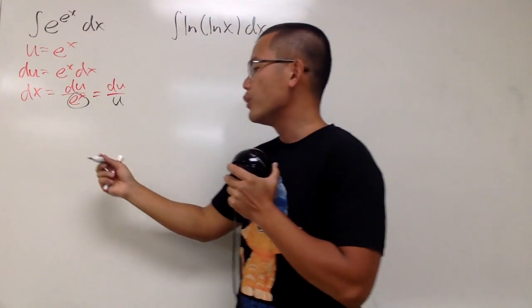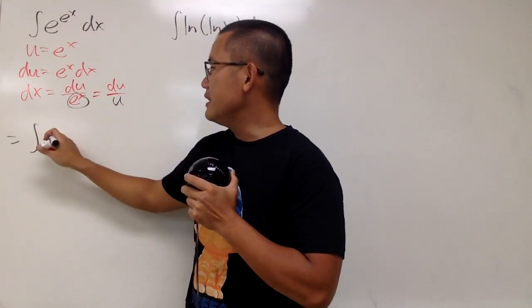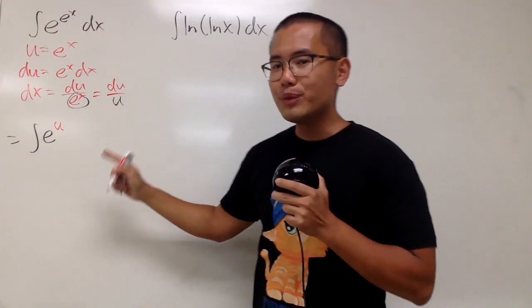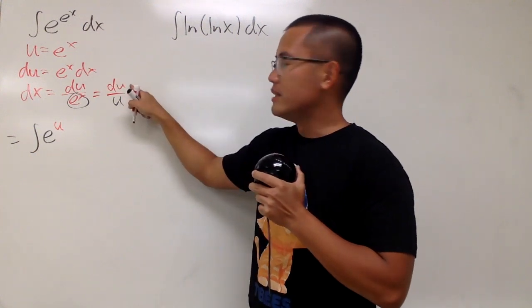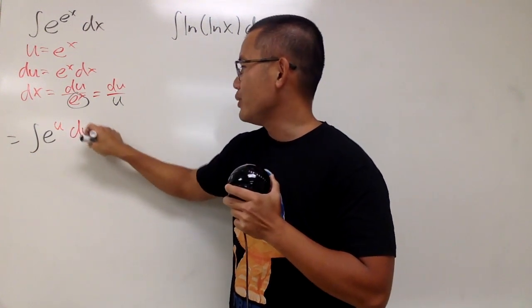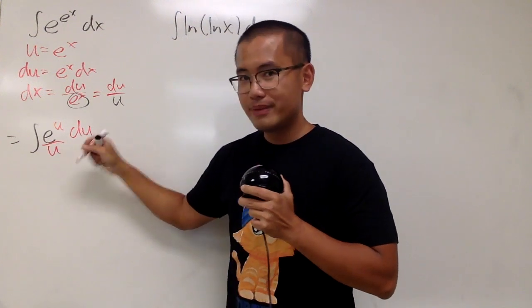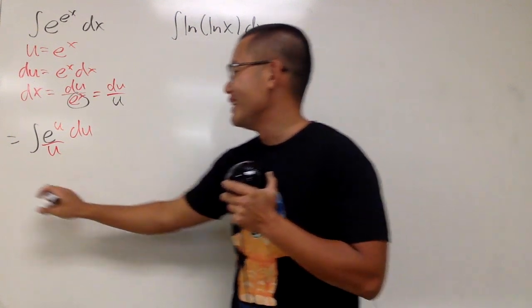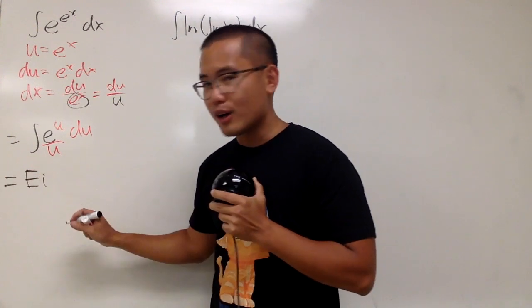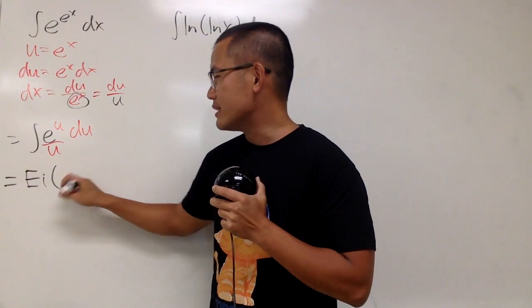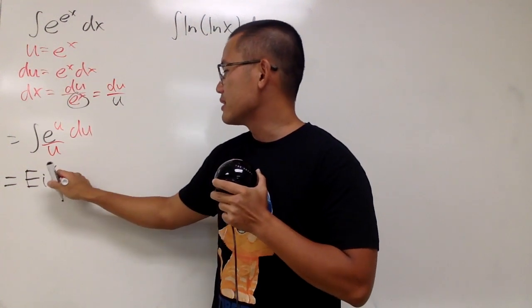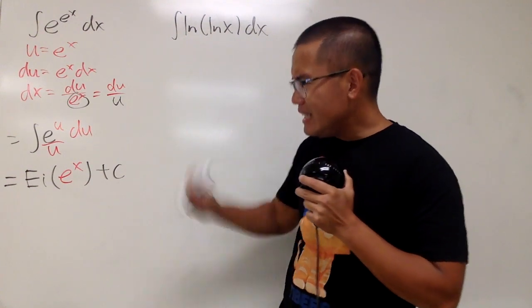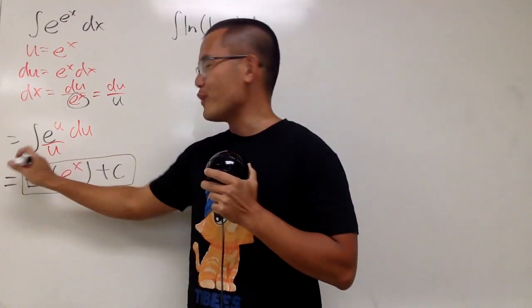Now, take this integral to the u world. We will get the integral, this e stays, but this e to the x is the u, so let's put that down. And we see dx is just du over u. Let's put down du over u. And now what's this? Yes, that's exactly Ei of u. The exponential integral function, and we are using u as the input, but we know u is e to the x. So let's just put that down, and we are done. Ei of e to the x plus C. That's it. Very, very nice.